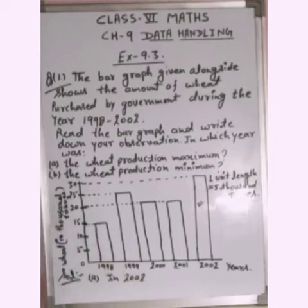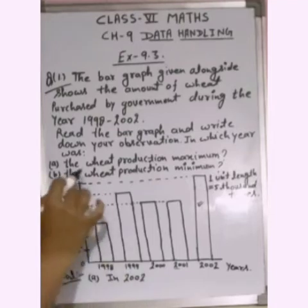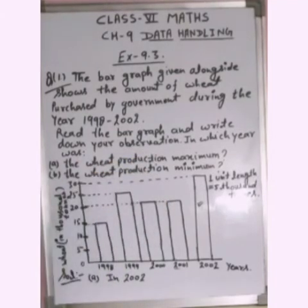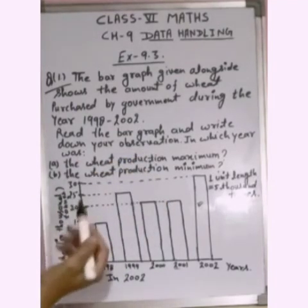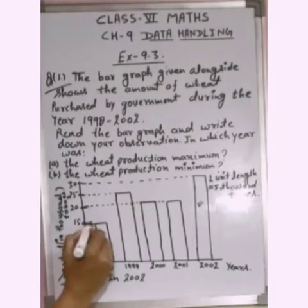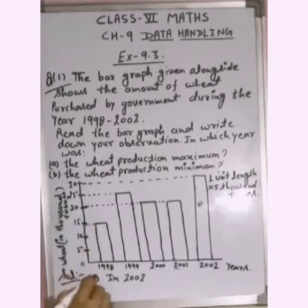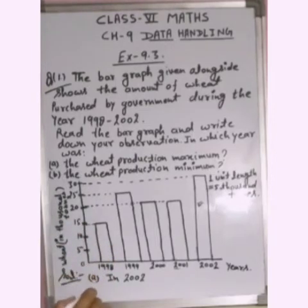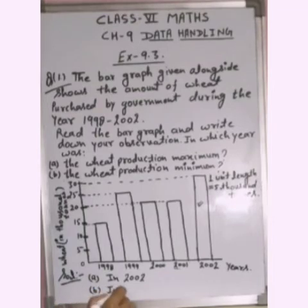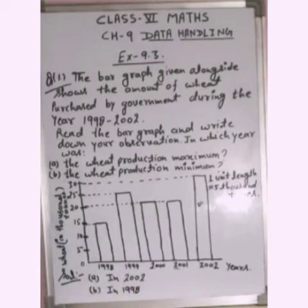The second question is: in which year was the wheat production minimum? The minimum is 15,000 tons, which corresponds to the year 1998. So the wheat production was minimum in 1998.